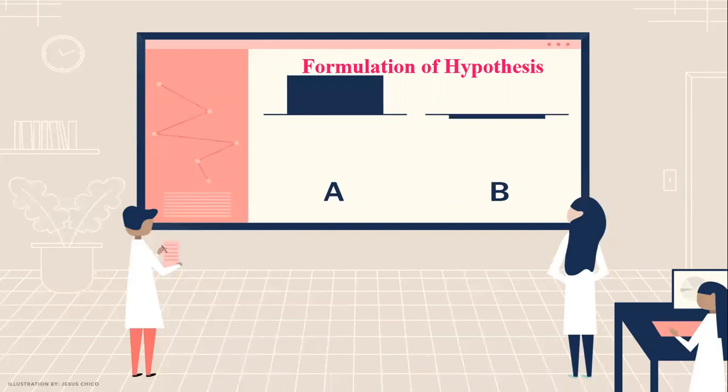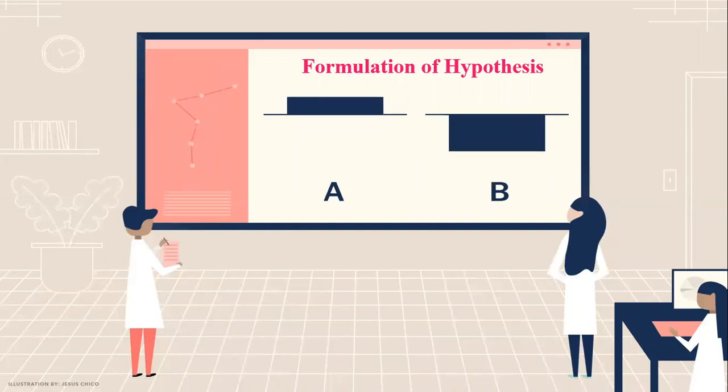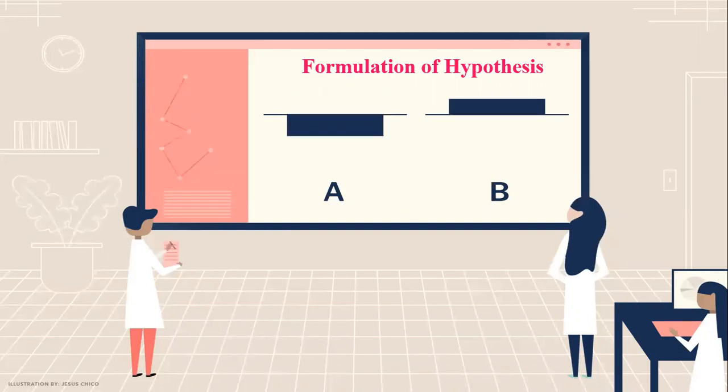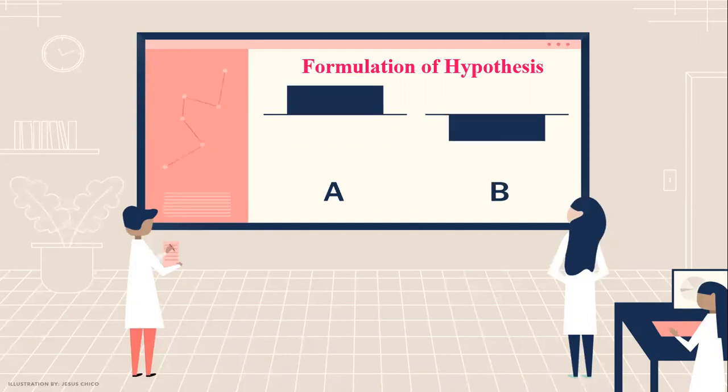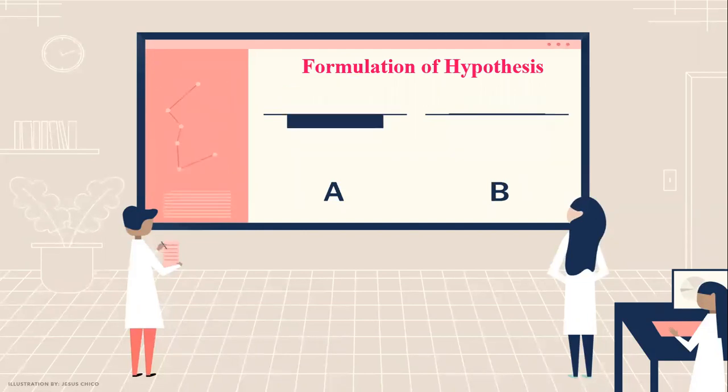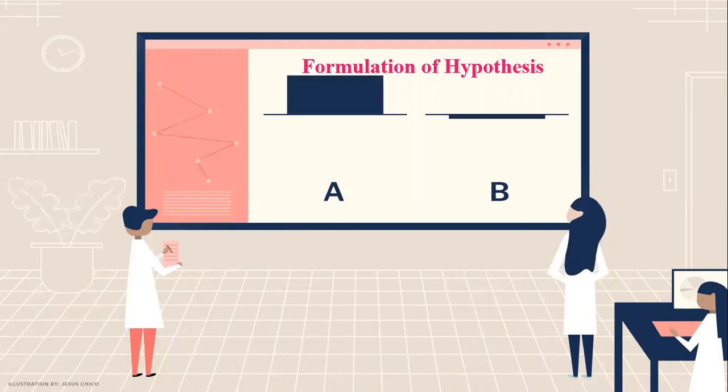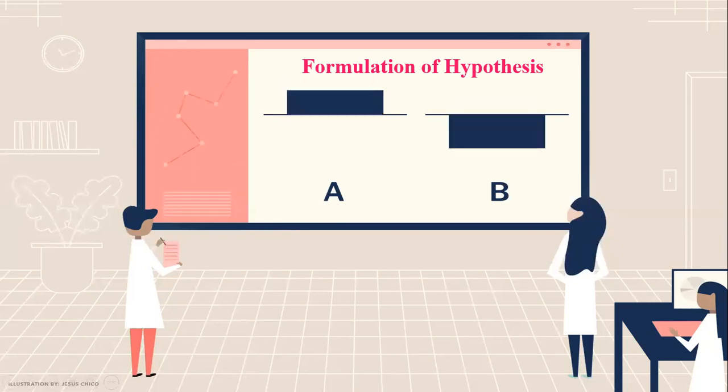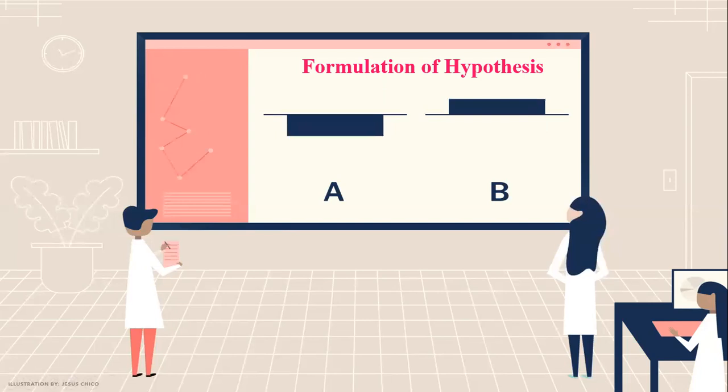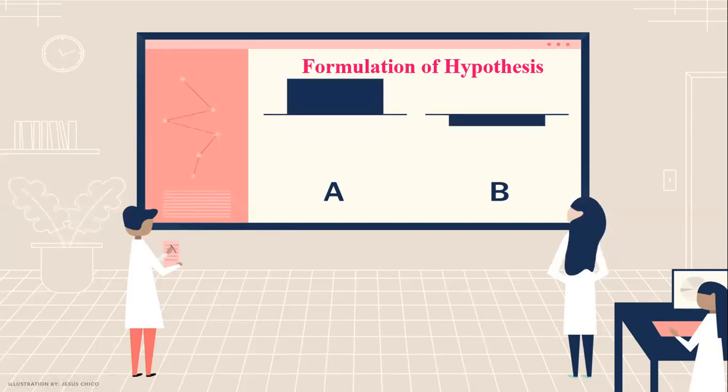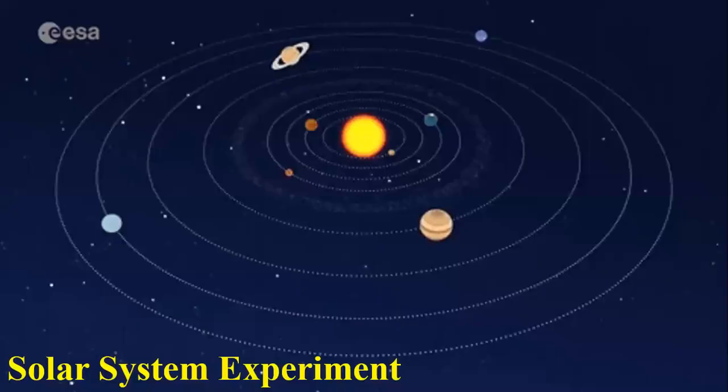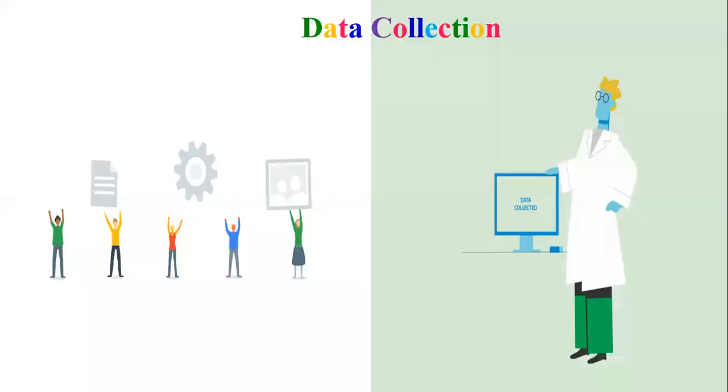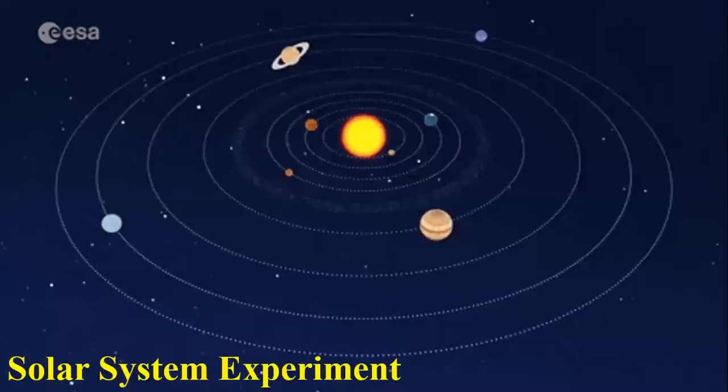I will give you an example. If lady A said that earth is revolving around the sun and the sun is static. Lady B said no. Earth is revolving, sun is static. And woman C said both are revolving. So you should justify who is right and who is wrong. You should go for an experiment.